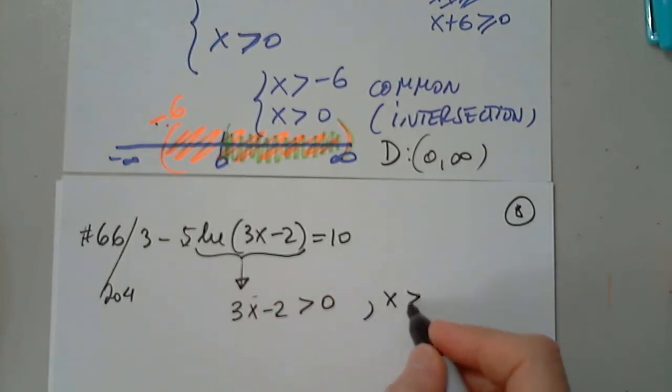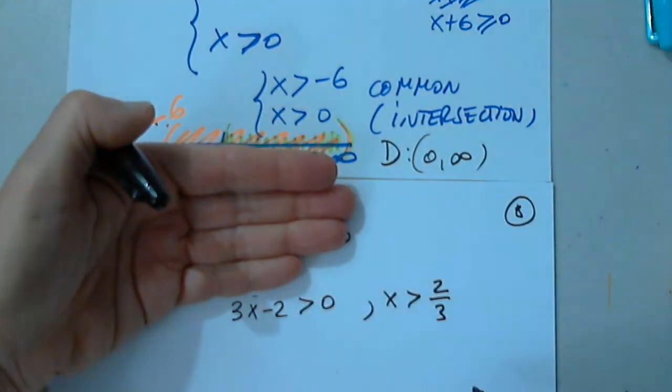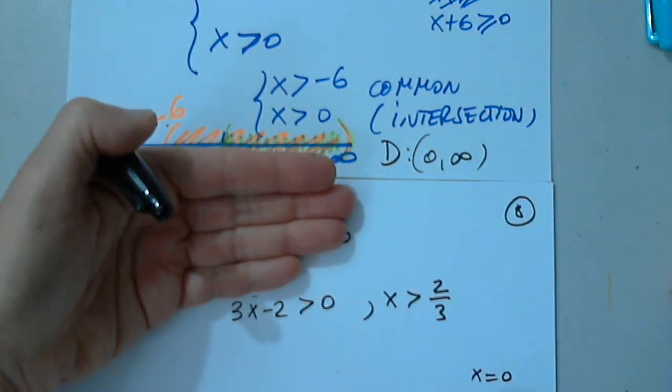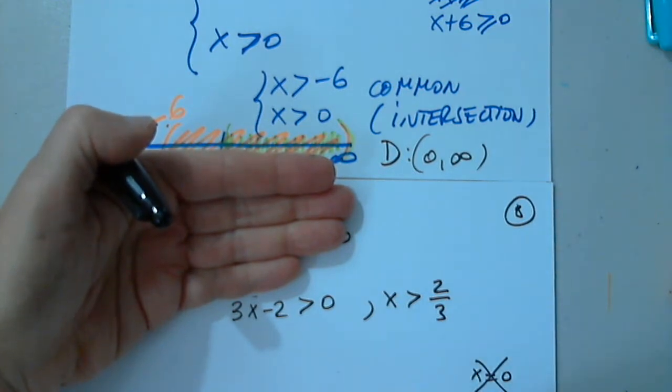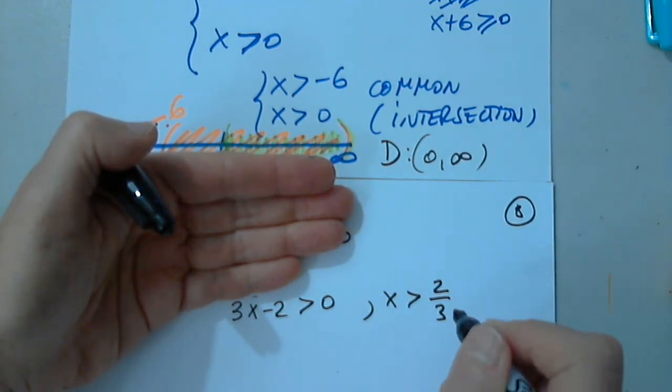Move to divide by 3. So if at the end of the day I get x equals 0, I'll say no way. If I get x equals negative 10, I'll say no way. Whatever solution I get, it has to be greater than 2 thirds, not even 2 thirds.